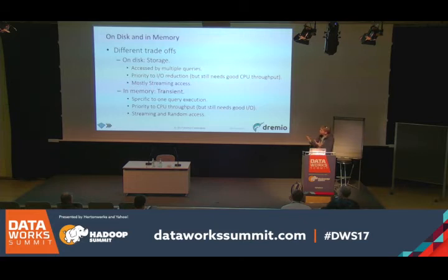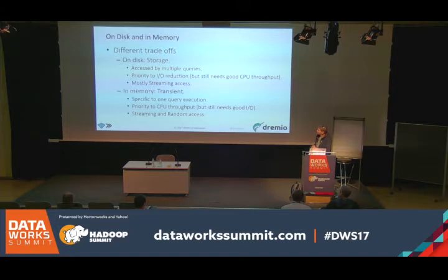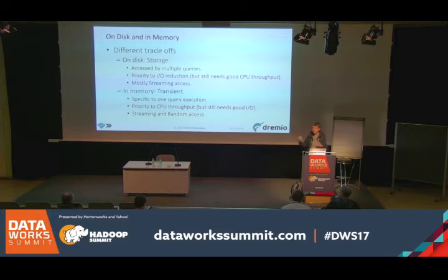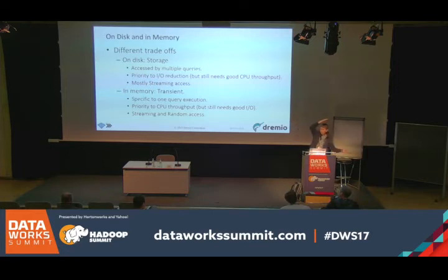When you have data in memory, you usually already have only the columns you need, because you loaded it specifically for certain query execution. You also need random access — for example, doing joins or hash aggregations in memory requires constant-time access to values by index. That changes how we lay out data. In Parquet we have a representation that excludes nulls — all values are next to each other without nulls. In Arrow we keep empty slots for nulls so you can still have constant-time random access to values by their index.